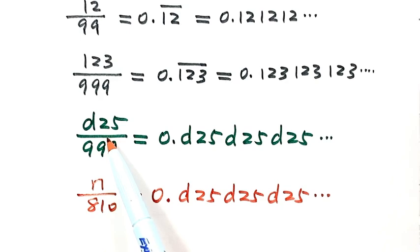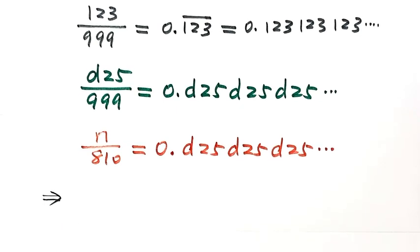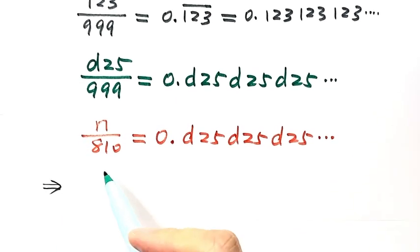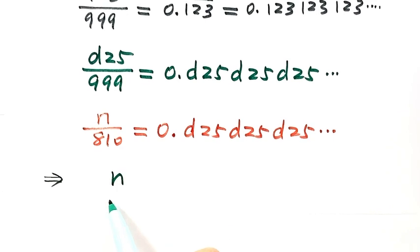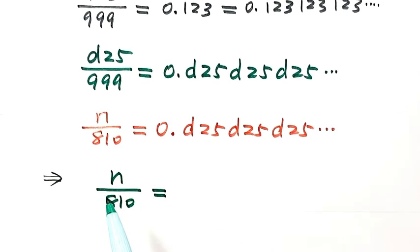so that means these two fractions must be equal. So then we have n over 810 equals d25 over 999.